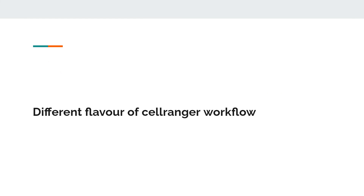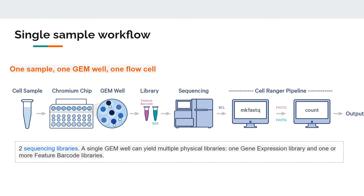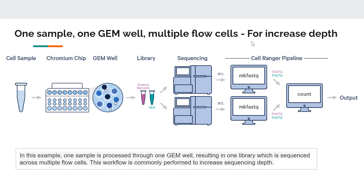To summarize the algorithm: valid barcodes → confidently mapped reads → remove antisense reads → UMI correction → UMI deduplication → cell calling → count matrix. Now let's look at the different workflow flavors in Cell Ranger. The first and most straightforward case is a single sample with one GEM well and one flow cell: extract the sample, load it into a single GEM well on the Chromium chip, prepare the library, sequence it, get one BCL file, use mkfastq to convert to FASTQ, and use count to get the output.